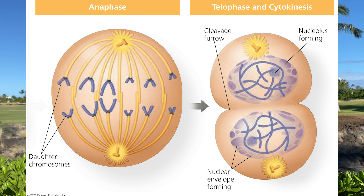Finally, telophase begins along with cytokinesis. The two daughter nuclei are going to form and the nuclear envelopes will arise. The chromosomes will become less condensed and the spindle apparatus will depolymerize. In animal cells a cleavage furrow is apparent. In plant cells a cell plate forms, creating two new separate identical daughter cells.